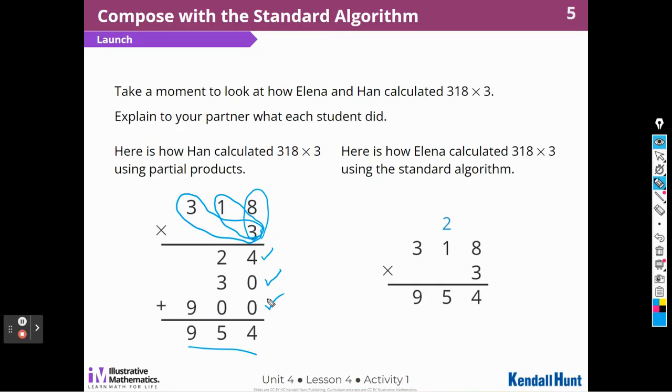Alina, instead of doing partial products, she used a different method. She used the standard algorithm. So she did 3 times 8, carried the 2 for the 24, right? The 24. She put 2 up here and 4 down here. Then she said 3 times 1 plus 2 is 5. 3 times 1 plus 2 is 5. 3 times 3 is 9. And Alina and Han both got the same answer.